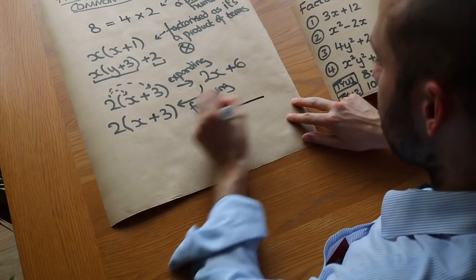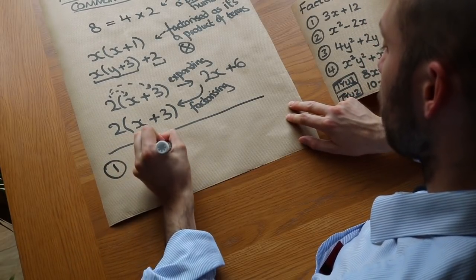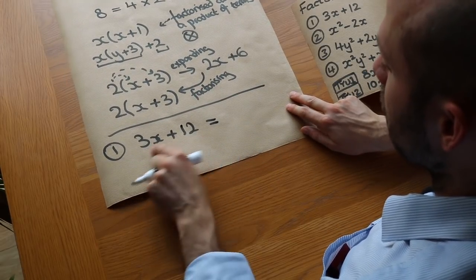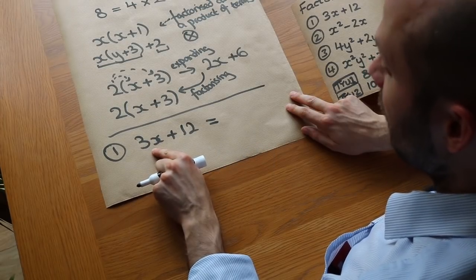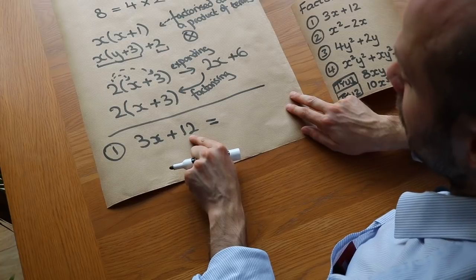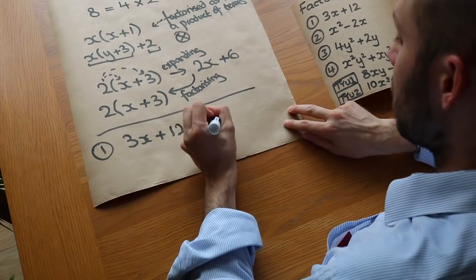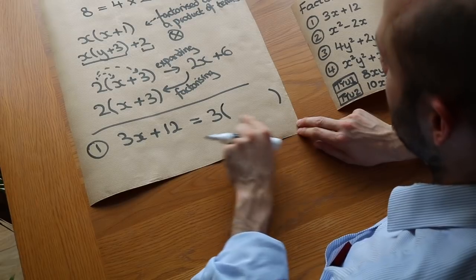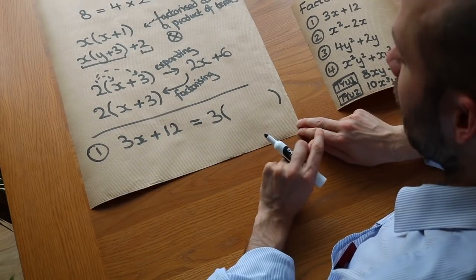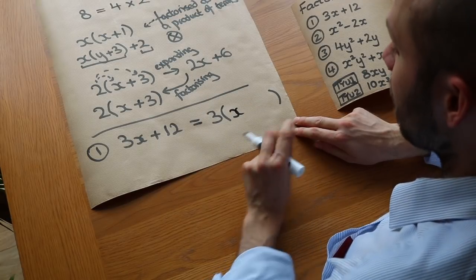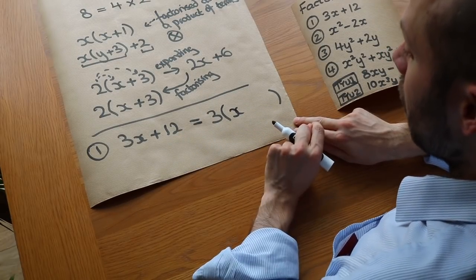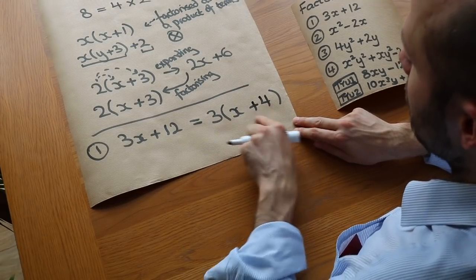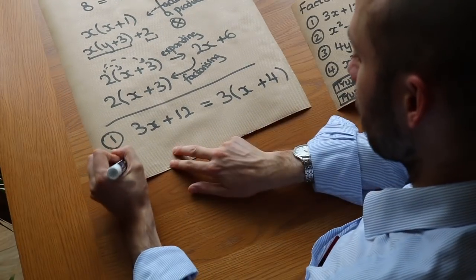Let's do another example: 3X+12. We consider what is common to both terms. They both have a factor of 3 — 3X is 3 times X, and 12 is 3 times 4. So we factorize out the 3, place it outside the bracket, then ask: 3 times what gives 3X? That's X. And 3 times what gives 12? That's 4. So we get 3(X+4).